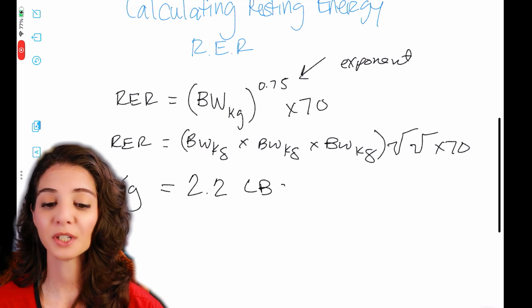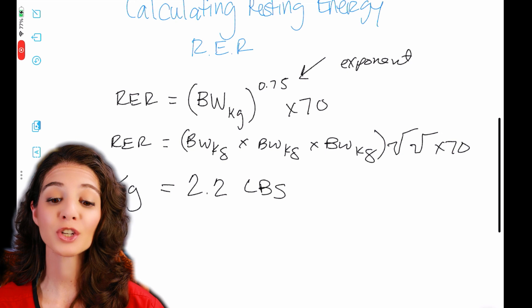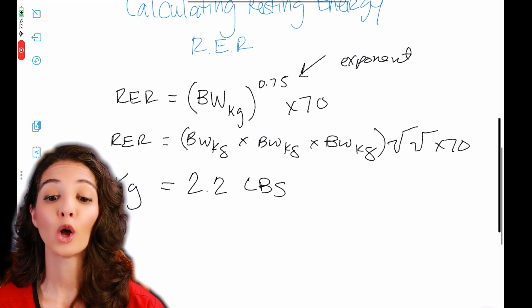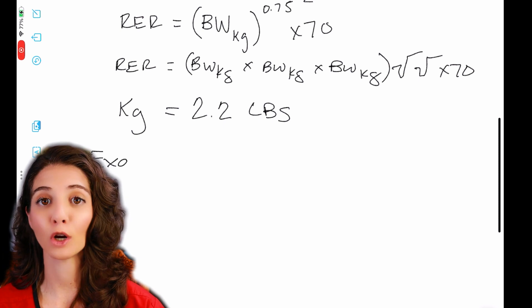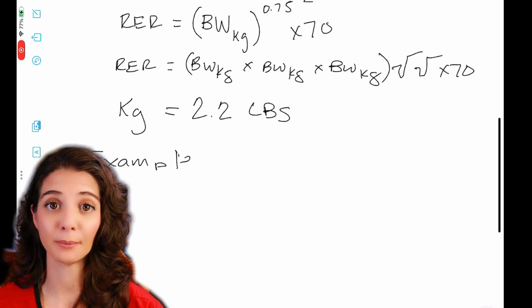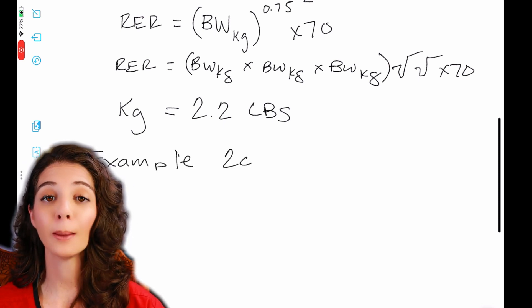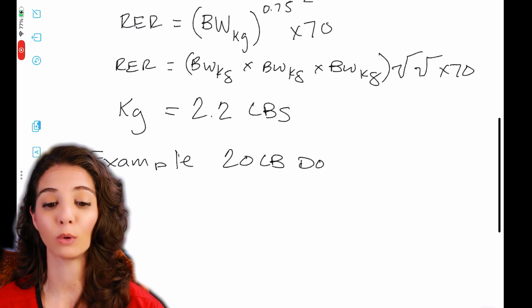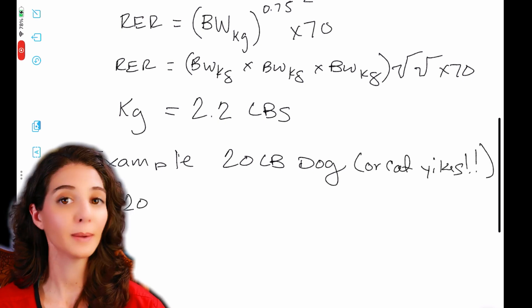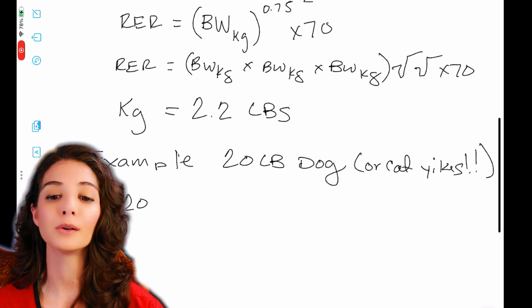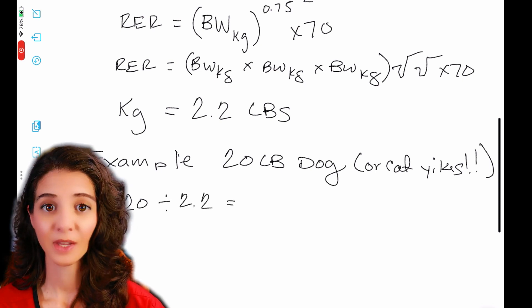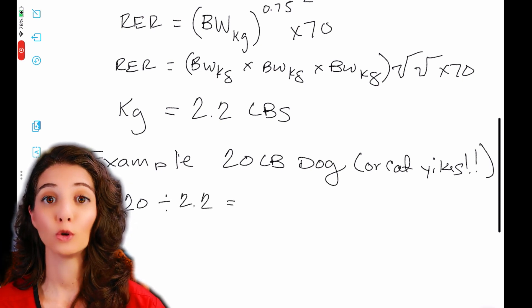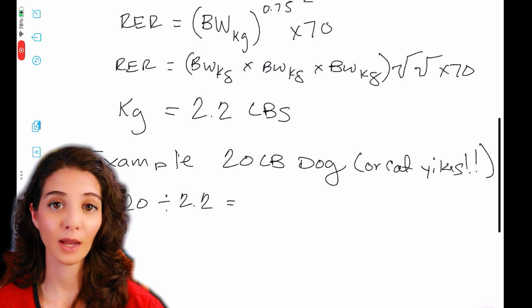So let's do some examples here. Kilogram conversion. A kilogram is equal to 2.2 pounds. So anytime you need to convert from pounds to kilograms, you take the amount in pounds and you divide it by 2.2 and that will give you kilograms. So let's do an example. Let's say we have a 20 pound dog. That's our favorite number. We always use that.